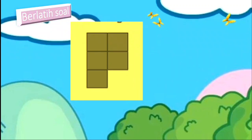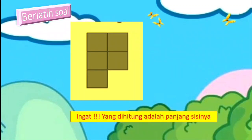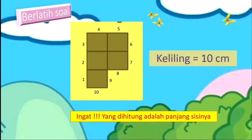Ada gambar seperti ini, kita hitung kelilingnya. Ingat, yang dihitung adalah panjang tiap sisinya. Yang pertama, satu — yang paling bawah. Dua, tiga, empat, lima, enam, tujuh, delapan, sembilan, sepuluh. Jadi panjang kelilingnya adalah 10 sentimeter. Sudah lebih paham ya? Nanti banyak berlatih. Mulai dari buku tematik bisa dikerjakan semua soalnya, nanti lebih pintar lagi.